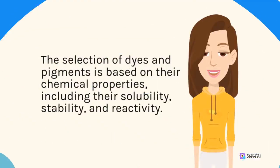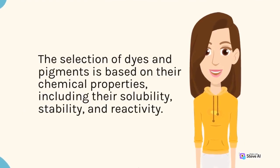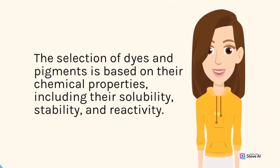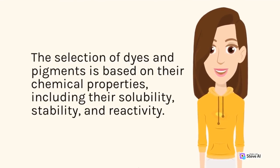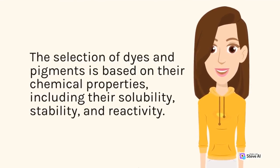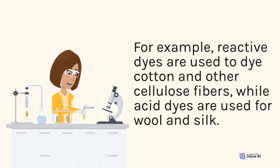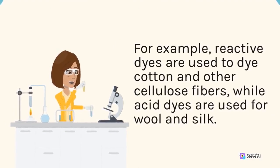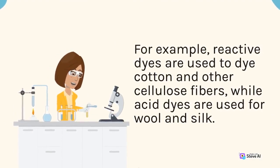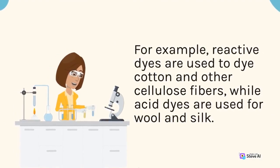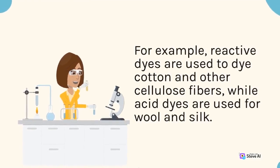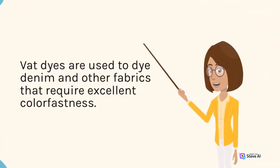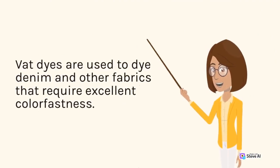The selection of dyes and pigments is based on their chemical properties, including their solubility, stability, and reactivity. For example, reactive dyes are used to dye cotton and other cellulose fibers, while acid dyes are used for wool and silk. Vat dyes are used to dye denim and other fabrics that require excellent colorfastness.